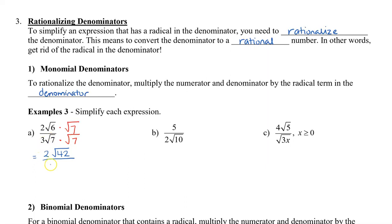In the denominator, because I have √7 times √7, that's going to be just 7. So now I have 3 times 7, which is 21. So the result is 2√42 over 21. Notice I didn't multiply by the 3 — I'm only trying to get rid of the radical, so I only multiply by the radical in the denominator.